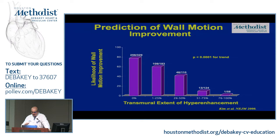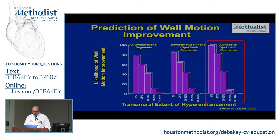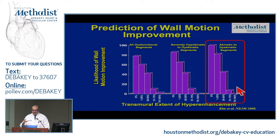The results in this study: on a segmental basis, the likelihood of recovery of function after revascularization was inversely related to the amount of enhancement within that segment. Those segments with more than 75% enhancement had essentially zero likelihood of recovery of function. On the flip side, segments with no enhancement had about 80% likelihood of recovery. For akinetic or dyskinetic segments specifically, if there was significant enhancement the likelihood of recovery was essentially zero, and if there was no enhancement but a segment was akinetic or dyskinetic, there was over 90% likelihood of recovery of function.